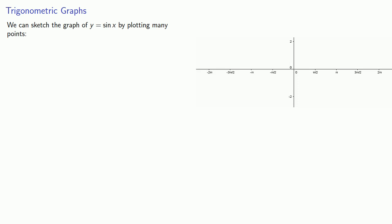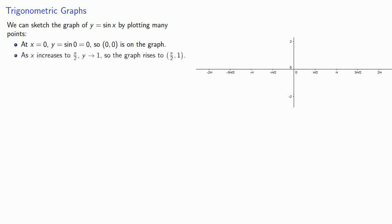We can sketch the graph of y equals sine of x by plotting many points. At x equals 0, y equals sine of 0, which is 0, so the point (0, 0) is on the graph. As x increases to pi over 2, y goes to 1, so the graph rises to (pi over 2, 1). As x increases to pi, y goes back to 0, so the graph falls to (pi, 0).